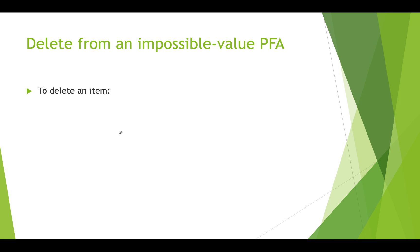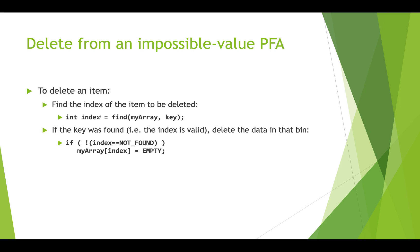If we want to delete from an impossible value partially filled array, then we again need to find the index of the item to be deleted. So we're going to use our find function that we just had on the last slide, pass in the key, we're going to get that index. And then if the key was found, so if the index is valid, we're just going to delete the data in that bin by setting the slot at that index in our array to our impossible value to EMPTY. But we only do this if index is not NOT_FOUND. Because if index is NOT_FOUND, index would be negative 1 and we wouldn't want to put negative 1 in here. That would cause our program to crash.